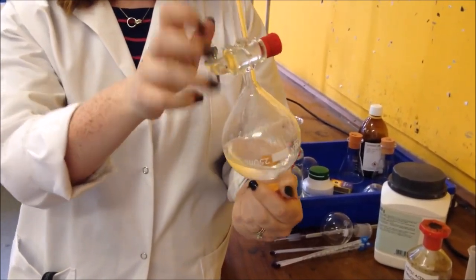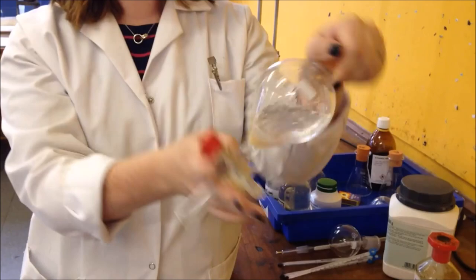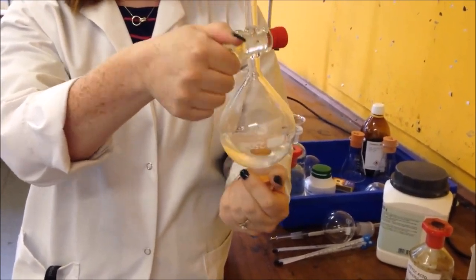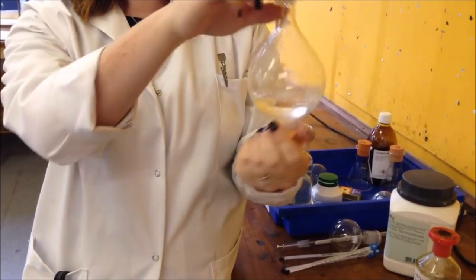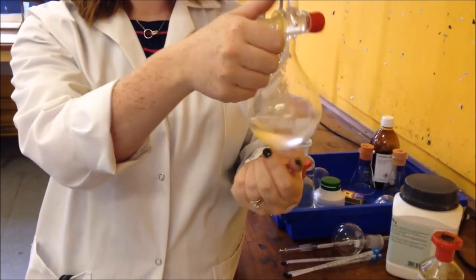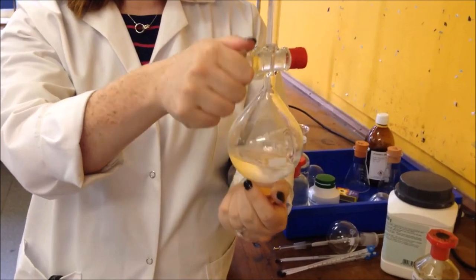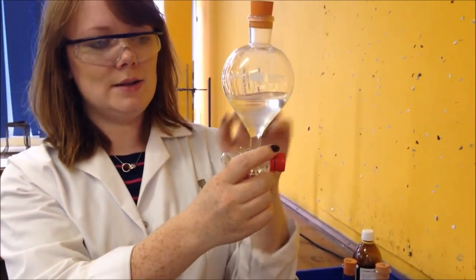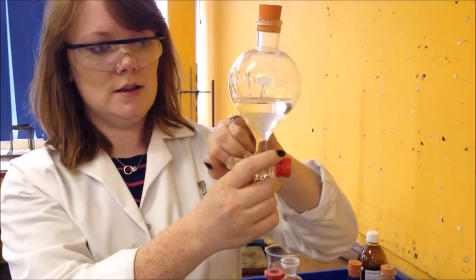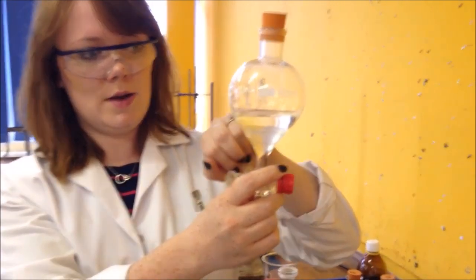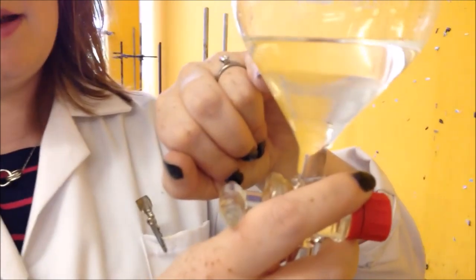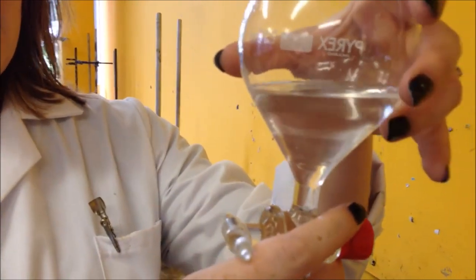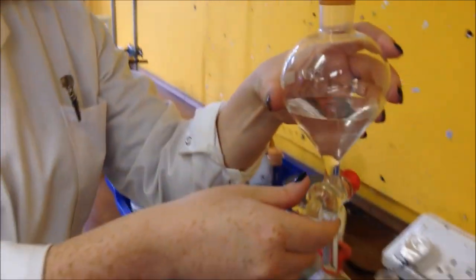Invert it until you stop hearing that fizz that it'll release—that tells you a gas has been produced. And then turn it back up the right way and allow it to separate out into two different layers. You can already see here that we've got a lower layer and top layer separating out. I'm just going to leave that for a bit and then I'm going to take it over here and pull off the lower layer.